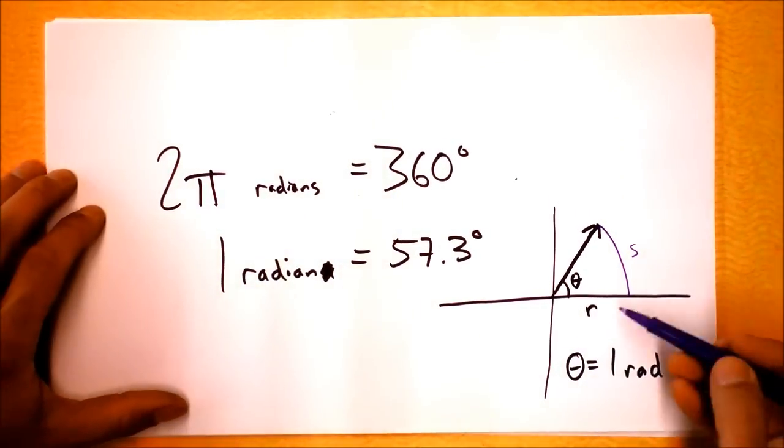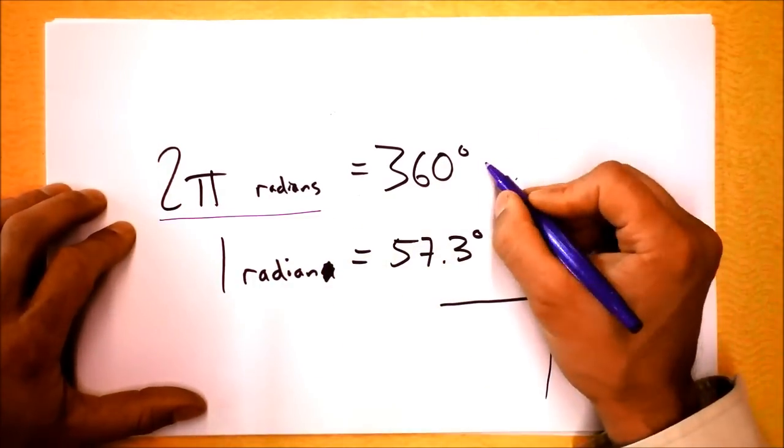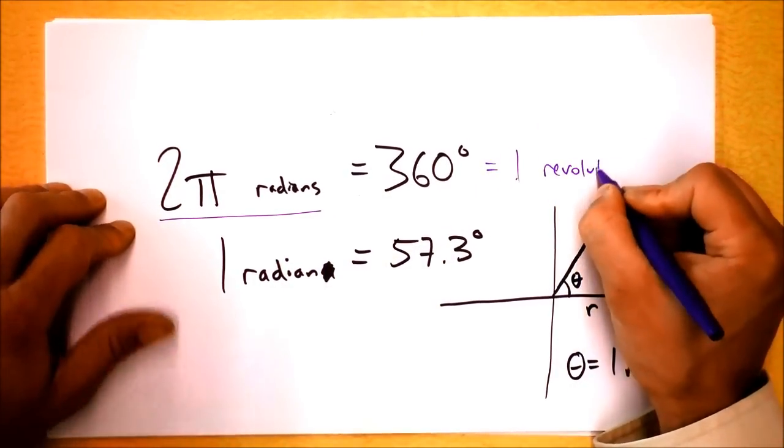Get to know radians because they're awesome. About how many radians fit in a circle? About six, right? Two pi radians fit in a circle. Three hundred sixty degrees is one revolution.